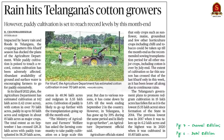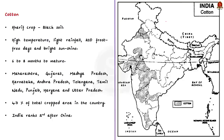This news article talks about the cotton crop and a few other Kharif crops. This is in the news because heavy rain in Telangana has affected the cotton crops. Let us take this as an opportunity to learn about cotton crops. Cotton is a Kharif crop and one of the main raw materials for the cotton textile industry.